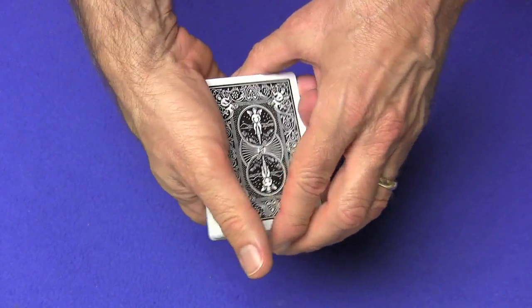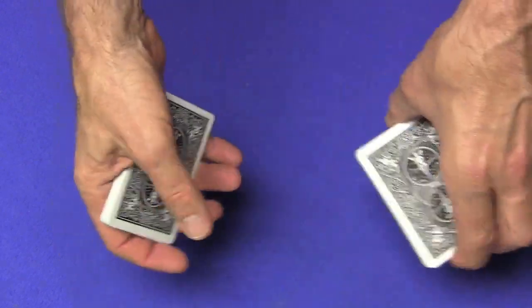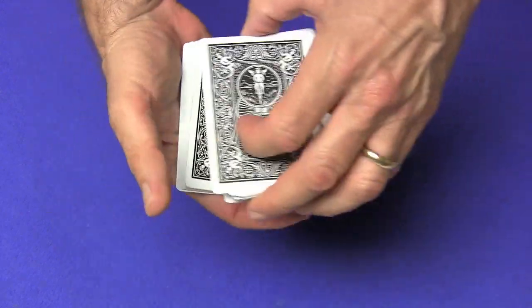So here is the triple swing false cut. One, two, three, four.